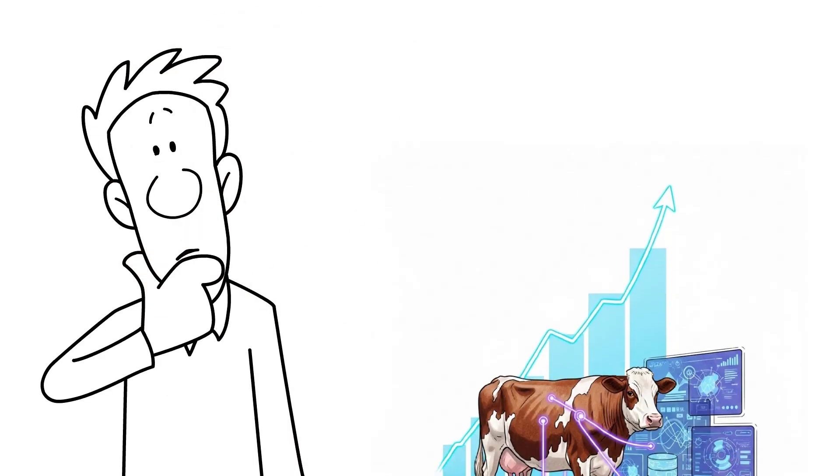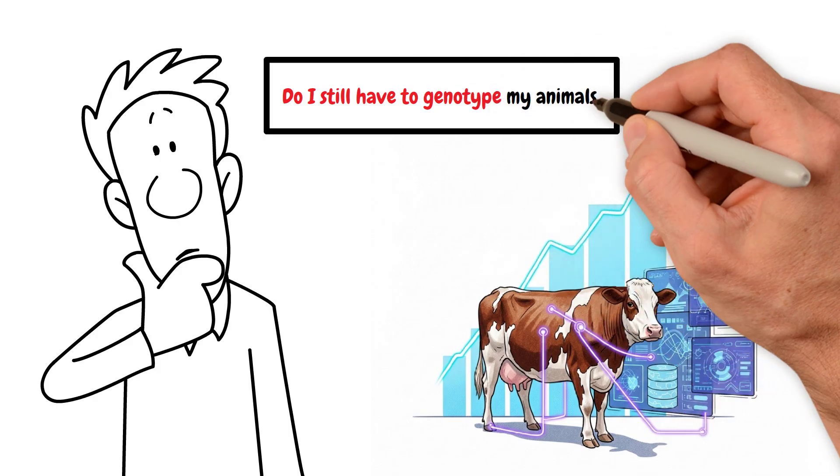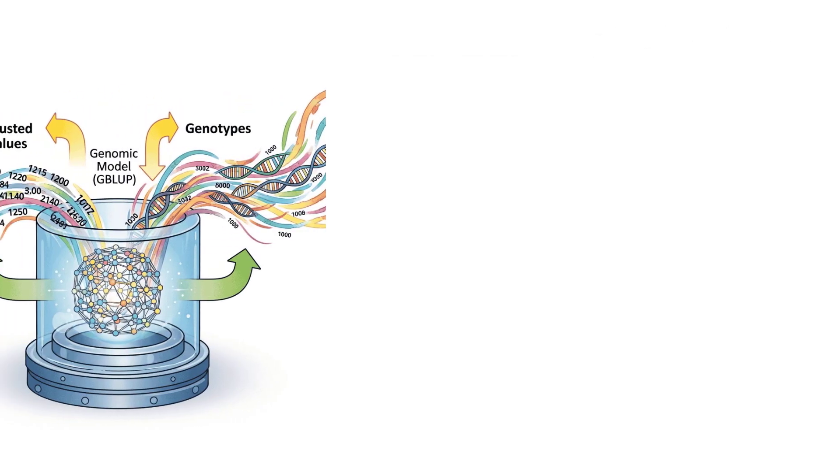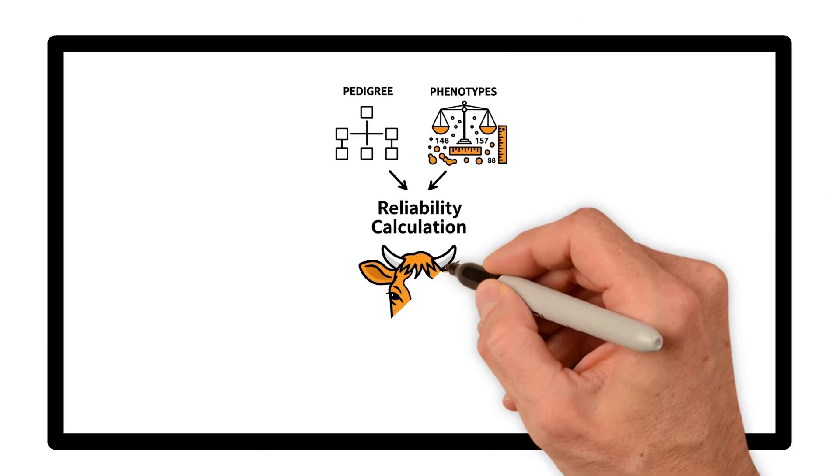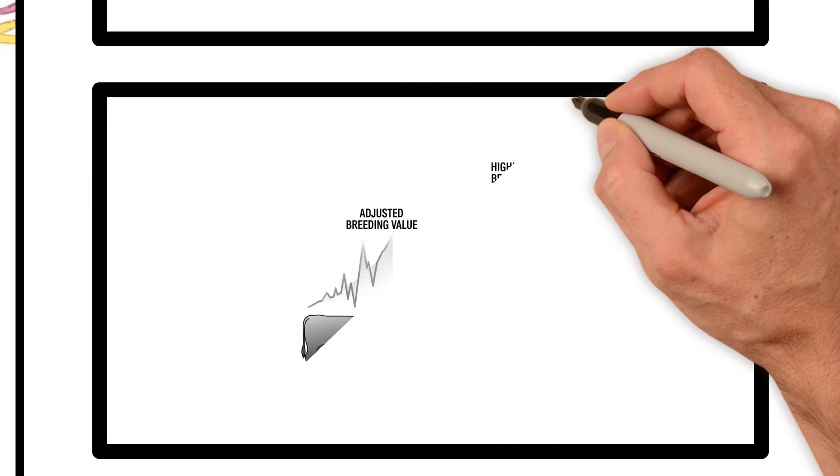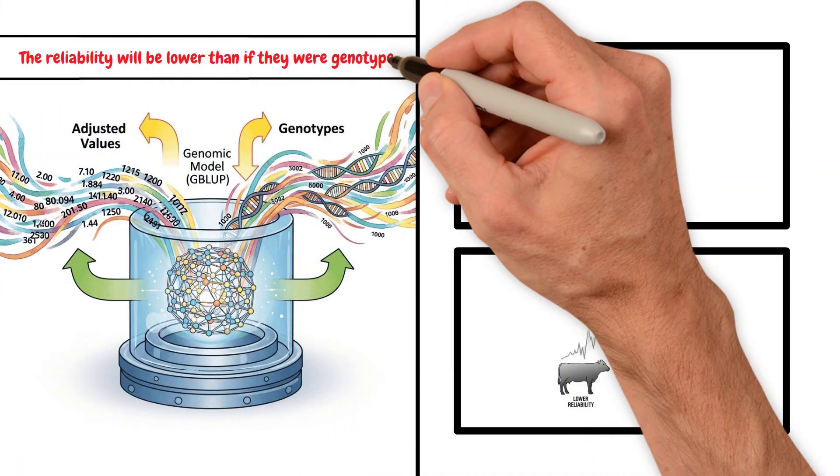Question Time: So if single-step enhances the breeding values of un-genotyped animals, do I still have to genotype my animals? Yes. A genotyped animal will come out of single-step with the most reliable breeding value. The reliabilities of non-genotyped animals are still based on pedigree and phenotypes. Although their breeding values will be adjusted, the reliability will be lower than if they were genotyped.